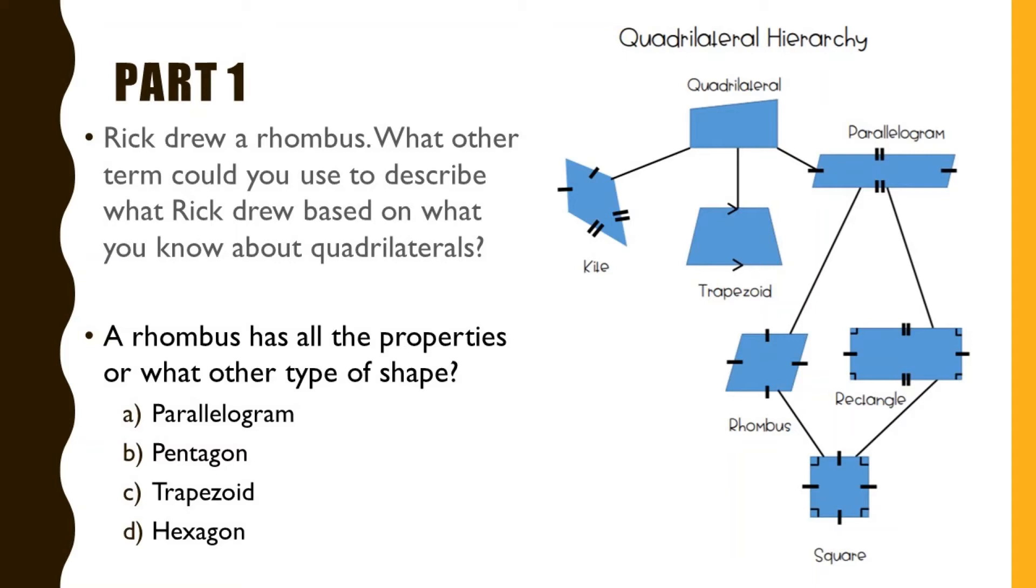Parallelograms have two pairs of parallel sides. Then beneath that we see a rhombus and a rectangle. The difference being a rhombus has four sides that are all equal and a rectangle has opposite sides that are equal or the same length.